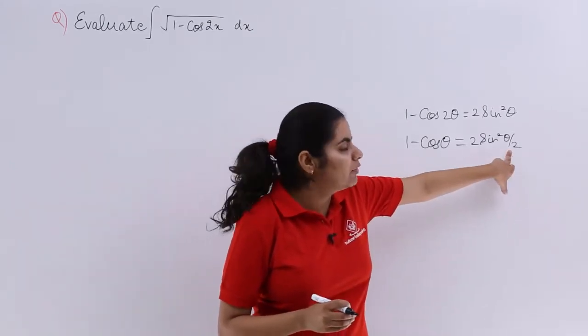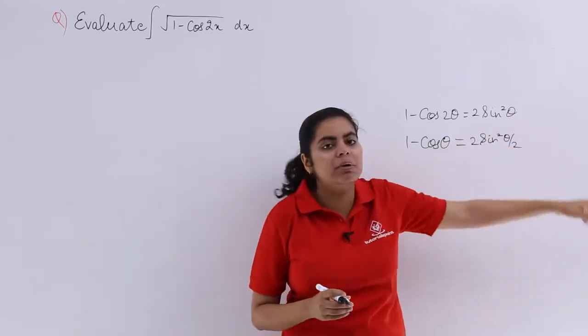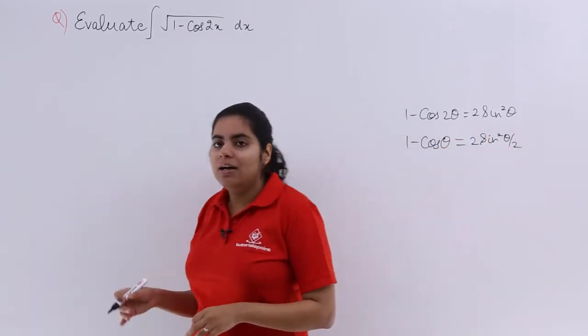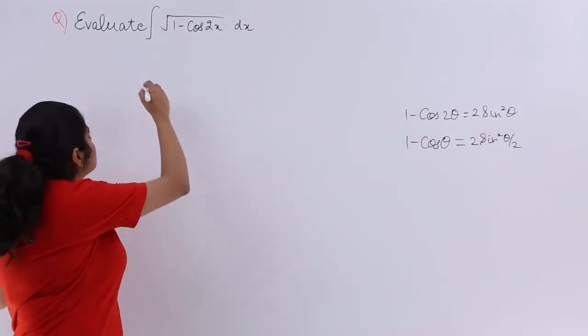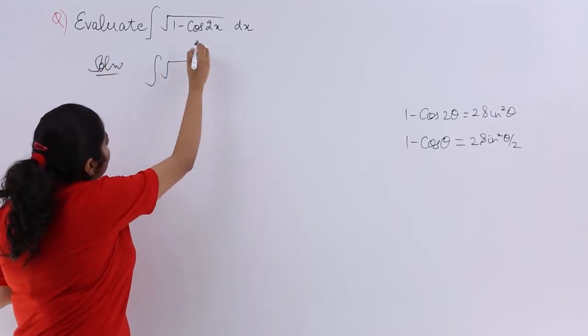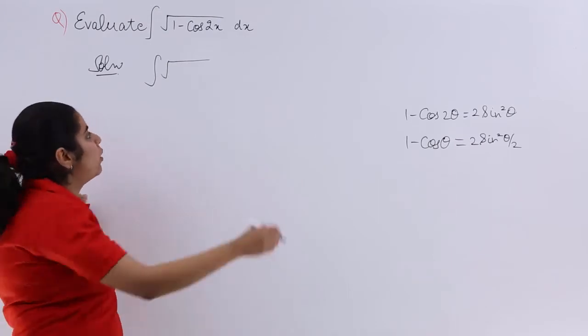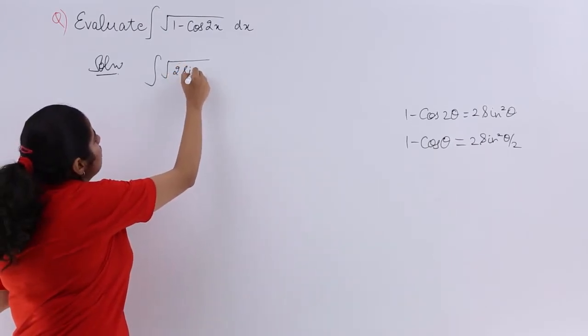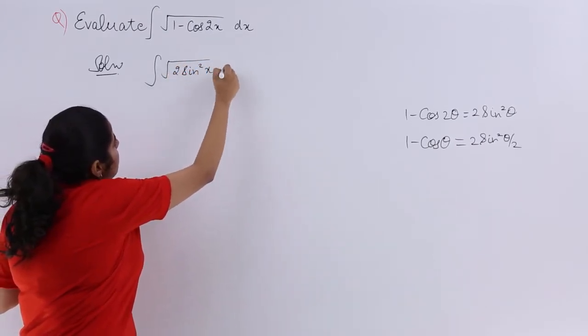So let's start. I write the solution. I have to evaluate ∫√(1-cos2x) dx. The formula says it becomes ∫√(2sin²x) dx, where half of the angle 2x is x.